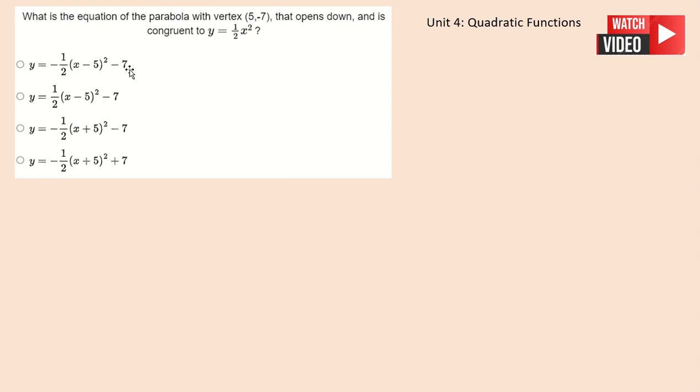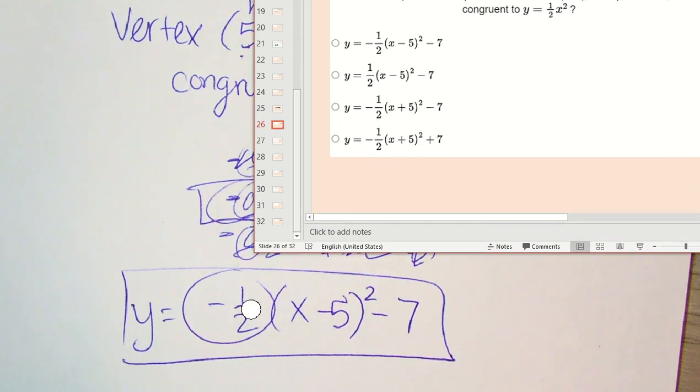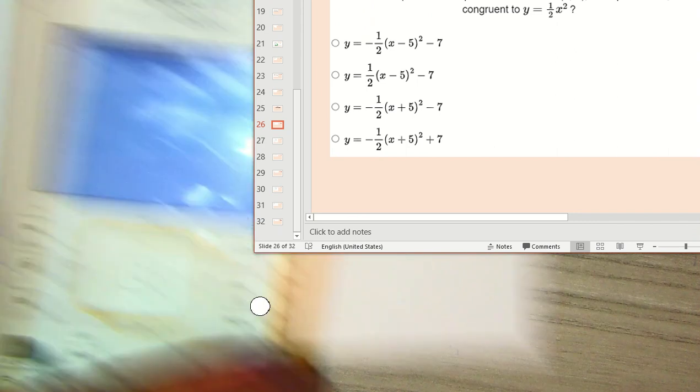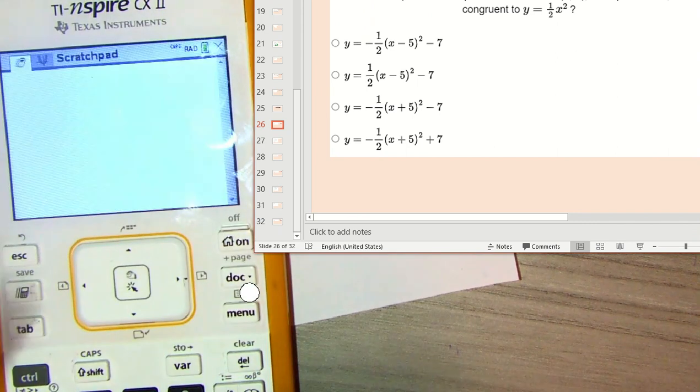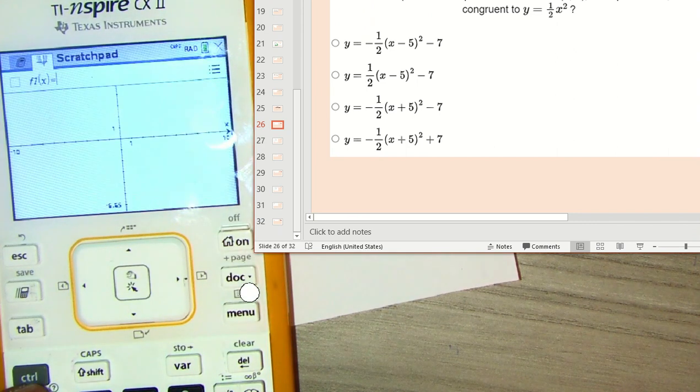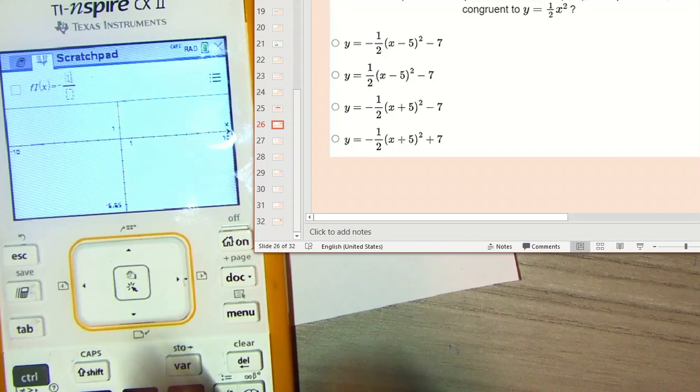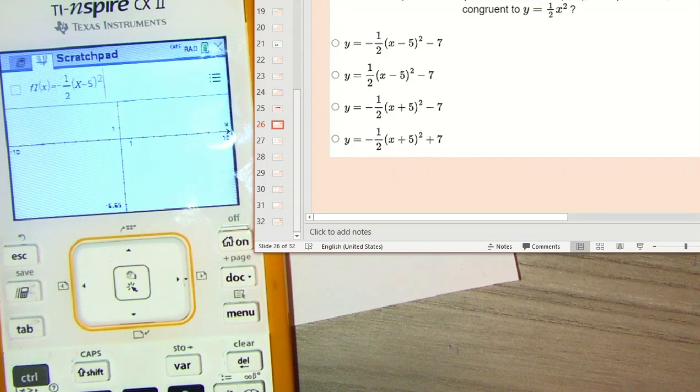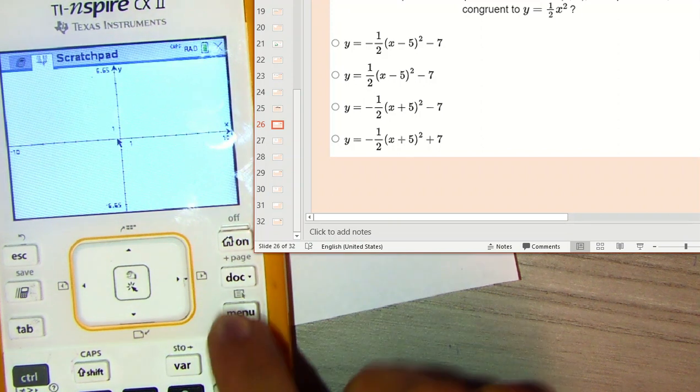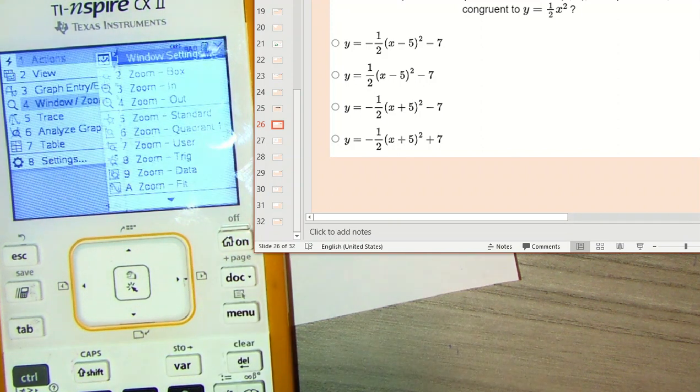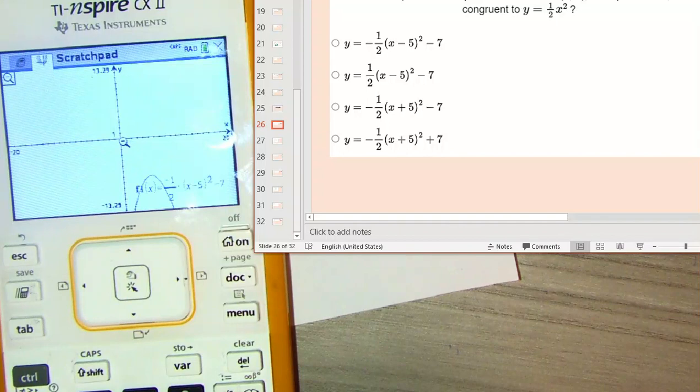Worst case scenario, you don't remember just how to interpret this. Please grab your calculator and just graph it. So I'm going to just show you here if we graph it, how it looks like. We're going to have the first one. So it's negative one half parentheses X minus five squared minus seven. And it doesn't show, but you know you graphed it. So zoom out.